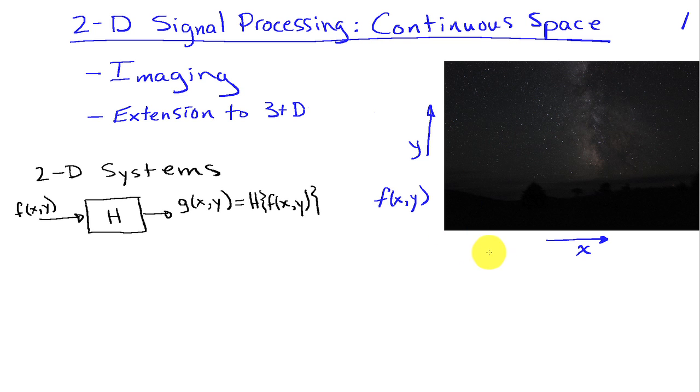So if we have an image, we're going to assume that the two independent variables or dimensions are X and Y. And that F of X comma Y represents the signal or the two-dimensional image in this case.